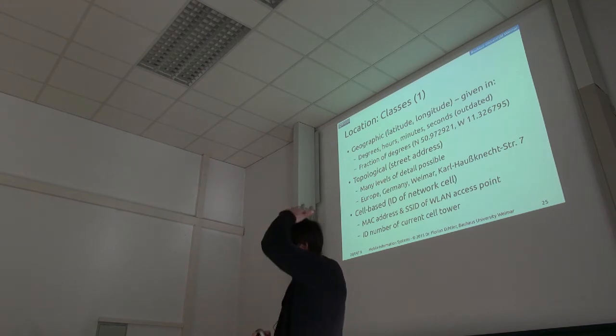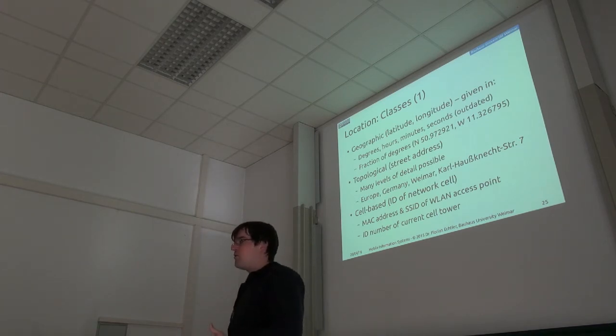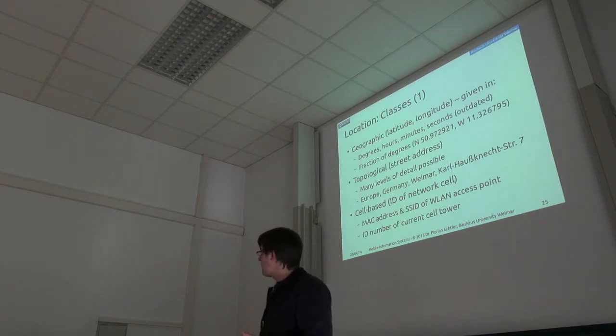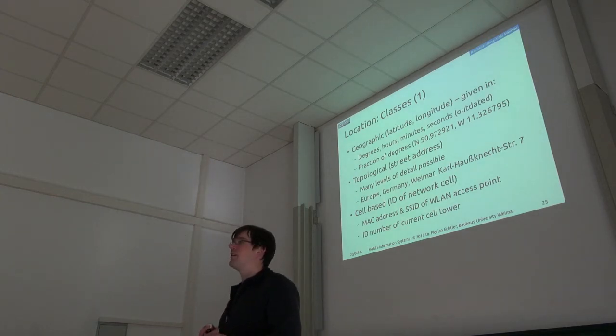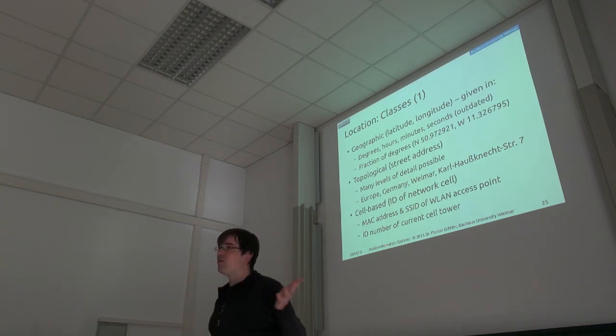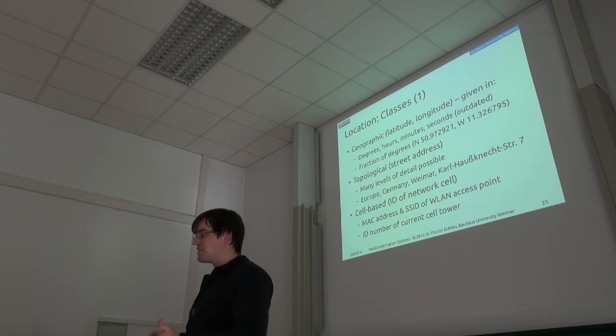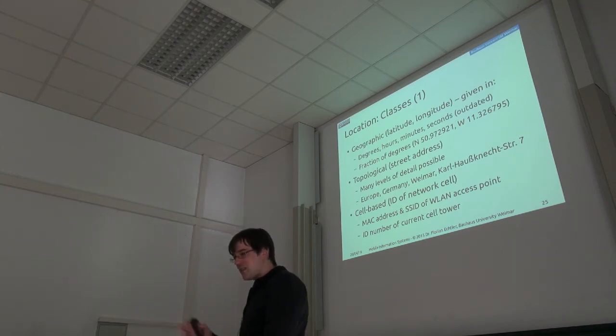All of this is topological location information. And then finally, from the network point of view, we usually have cell-based location information. That means the ID, the MAC address, for example, of the access point I'm connected to or the ID of the cell tower I'm currently connected to. So this is also location, but from a completely different point of view.